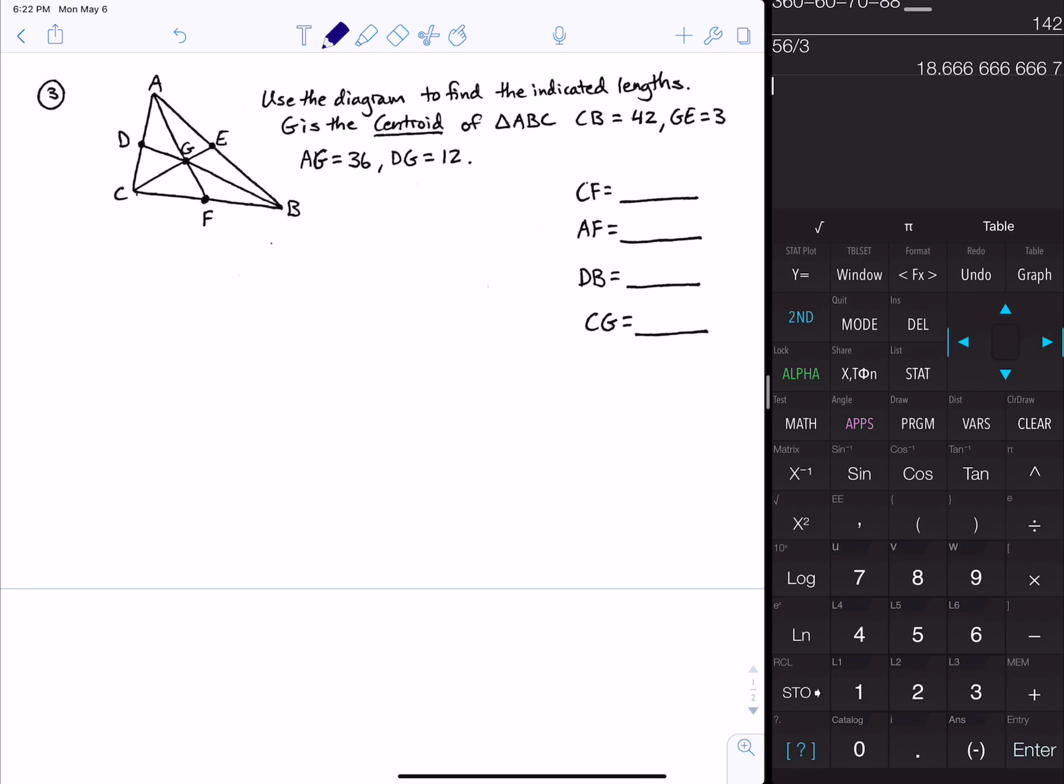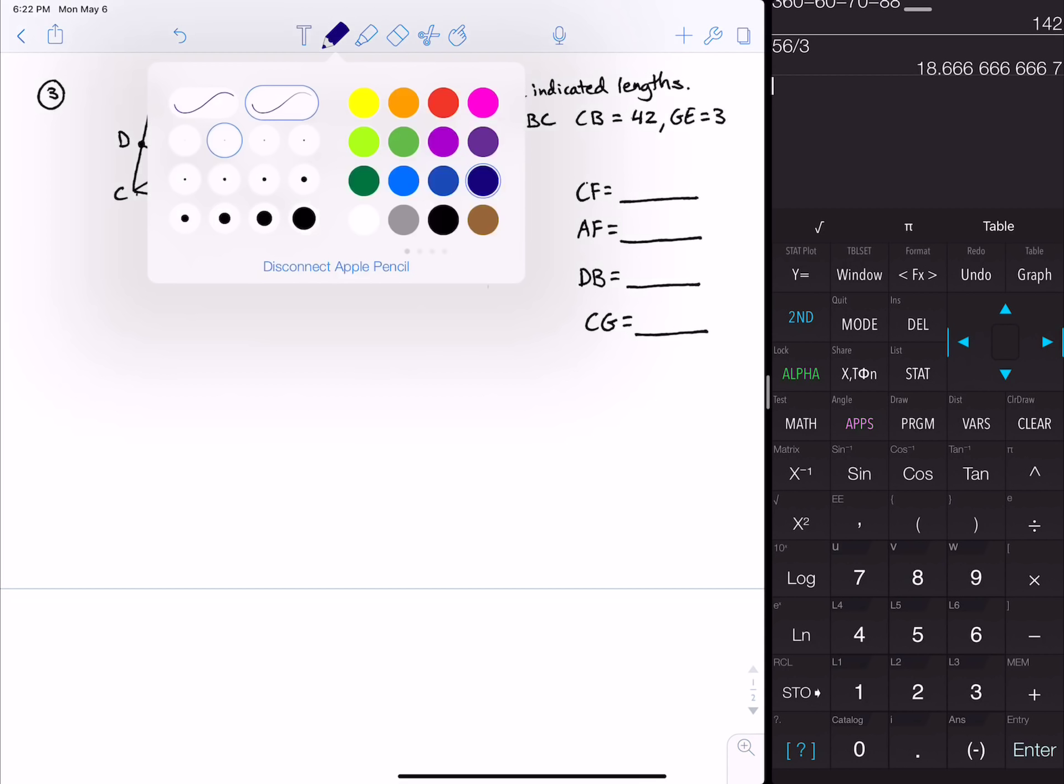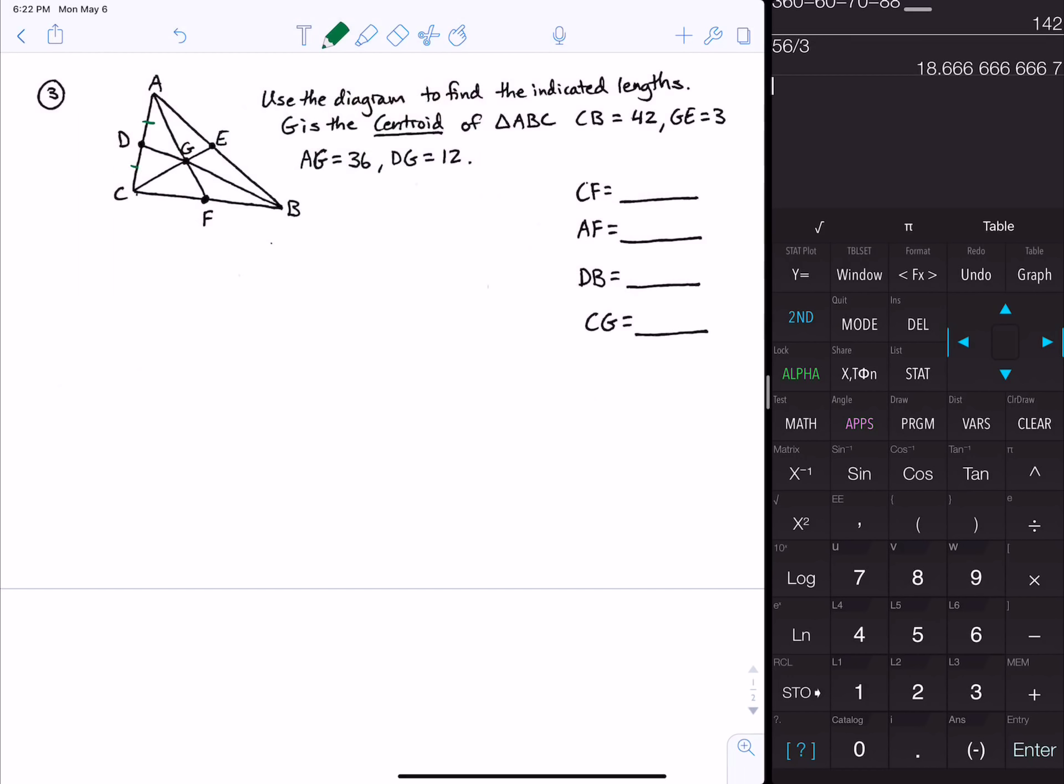Number three says use the diagram to find the indicated lengths. G is the centroid of triangle ABC. The centroid comes from the midpoints - it's the median. The three medians of the triangle cross at the centroid. A median is from the midpoint of a side to the vertex of the opposite side. They said AG equals 36, and we remember the two-thirds one-third rule.